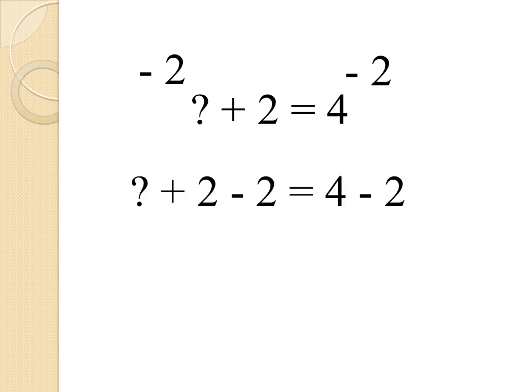So I subtract 2 from both sides, so now I have question mark plus 2 minus 2 equals 4 minus 2. The plus 2 and the minus 2 will cancel each other out, leaving me with question mark equals 4 minus 2. And now that's an equation I can run. The question mark's on one side, the 4 minus 2 is on the other. Question mark must equal 2.